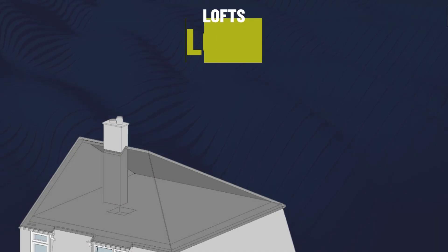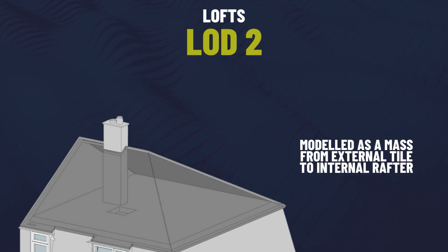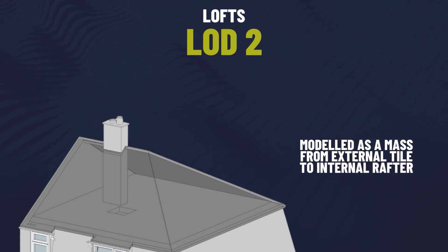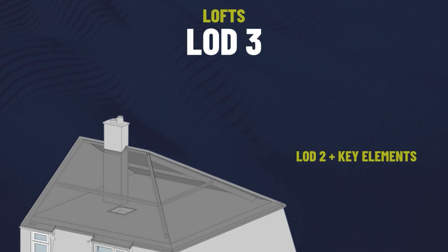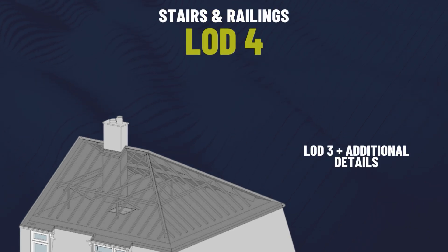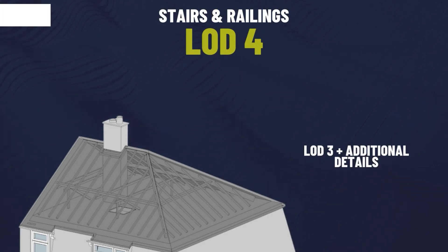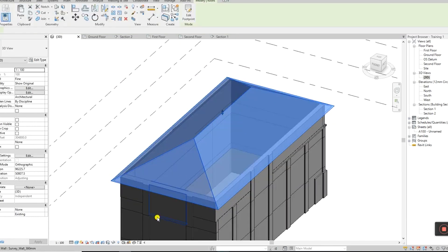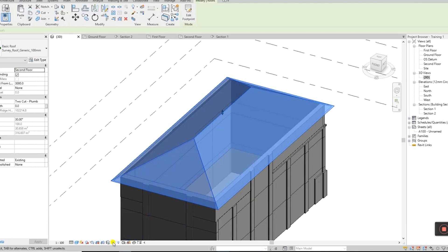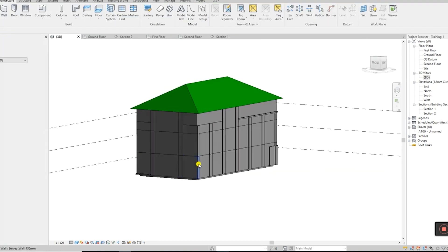Loft areas can be complex. At LOD2 they show a basic layout modelled from the external tile to the internal rafter. LOD3 expands on this by including key structural elements, and LOD4 captures trusses, beams, profiles and all the primary roof timbers. This detail is especially important for rooftop developments and loft conversions.